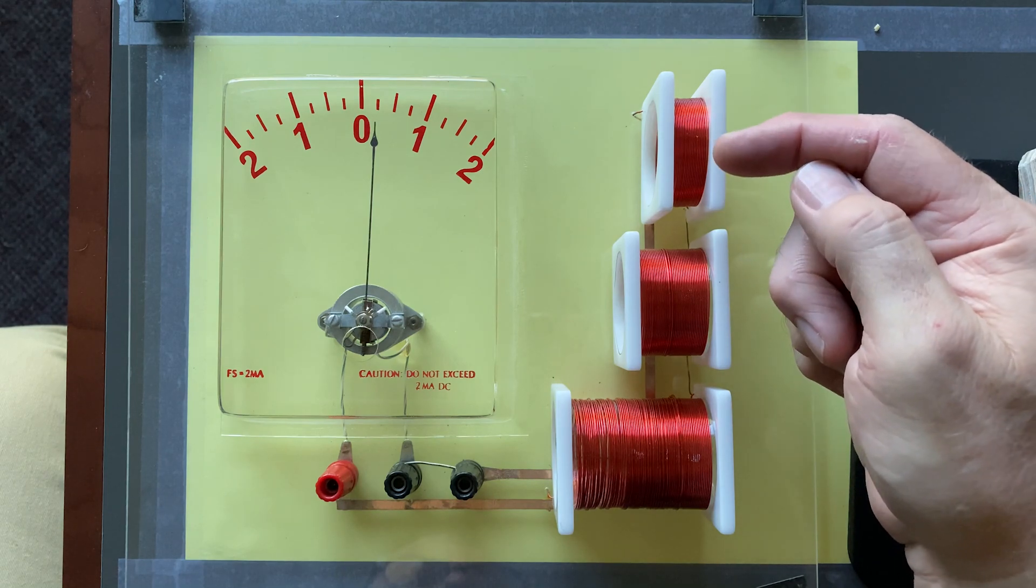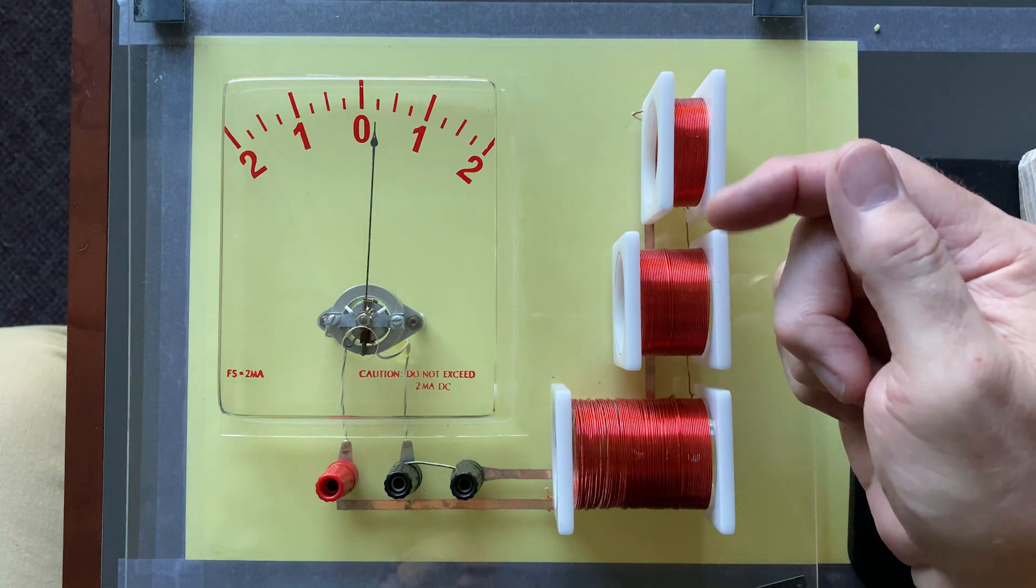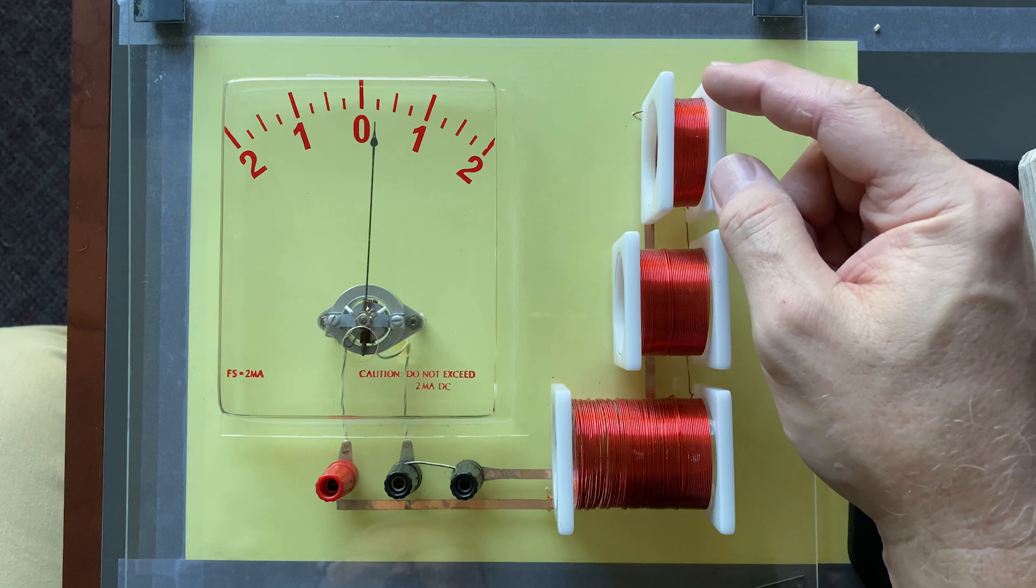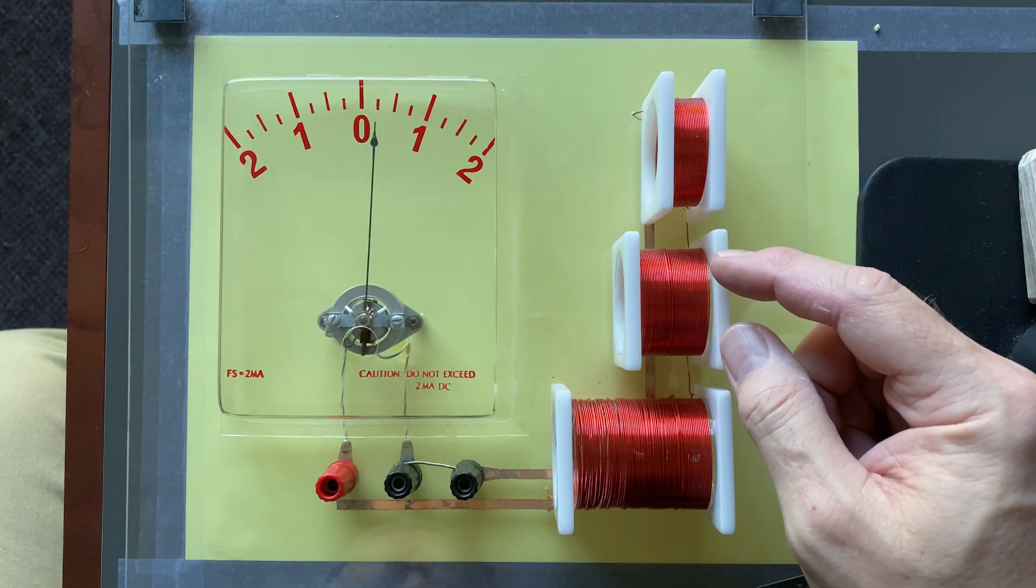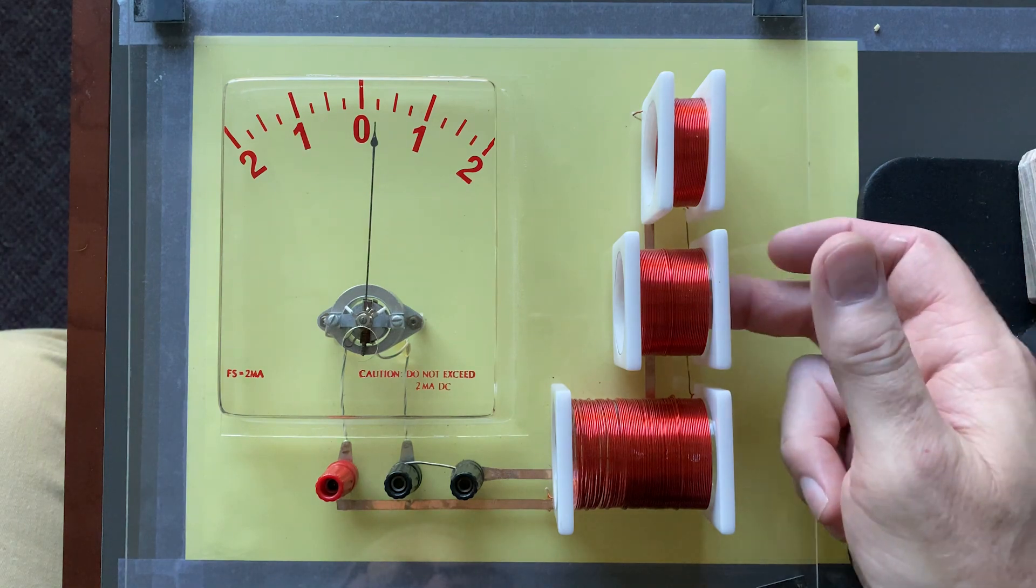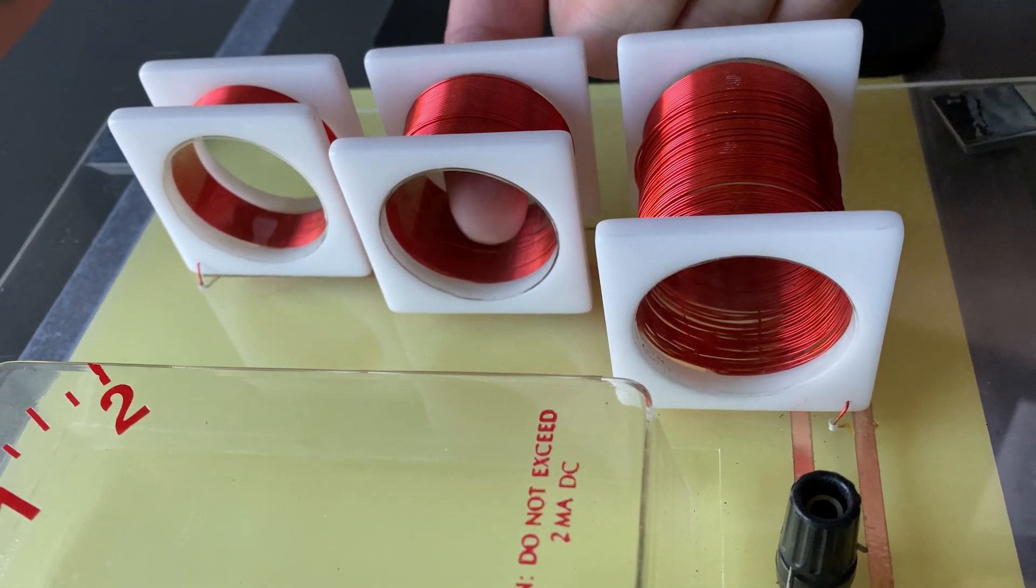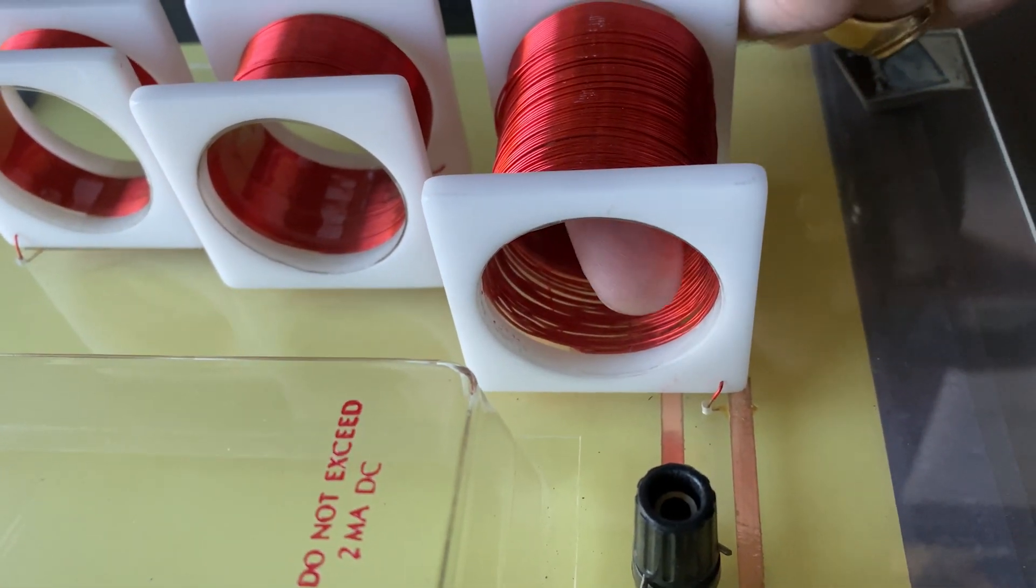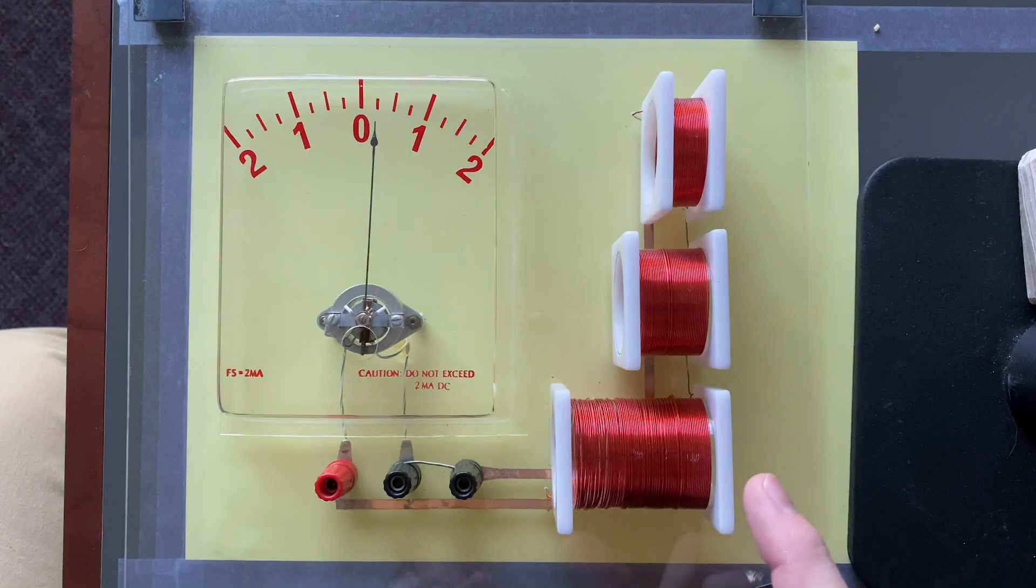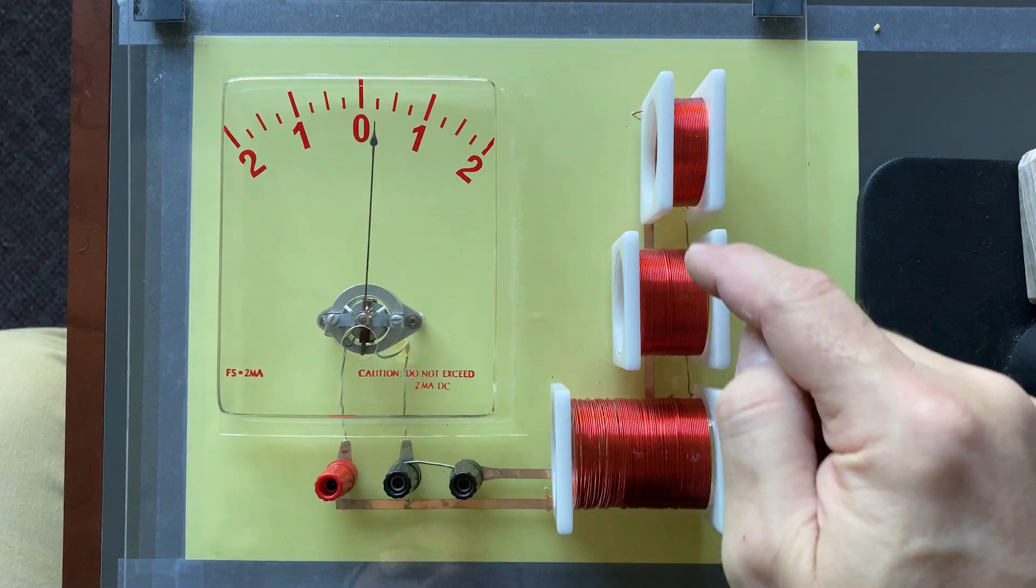Each of these coils has lots of wire that's been wrapped around a plastic core. And inside the plastic core, it's hollow. You can see my finger goes all the way through there in each one of those. My finger's not long enough to go through that one, but those are hollow.